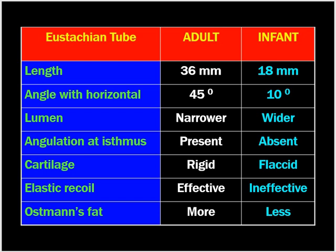The length of the adult Eustachian tube is 36 millimeters, whereas the pediatric Eustachian tube is 18 millimeters long. A short Eustachian tube might lead to infection spreading from the nose to the ear.